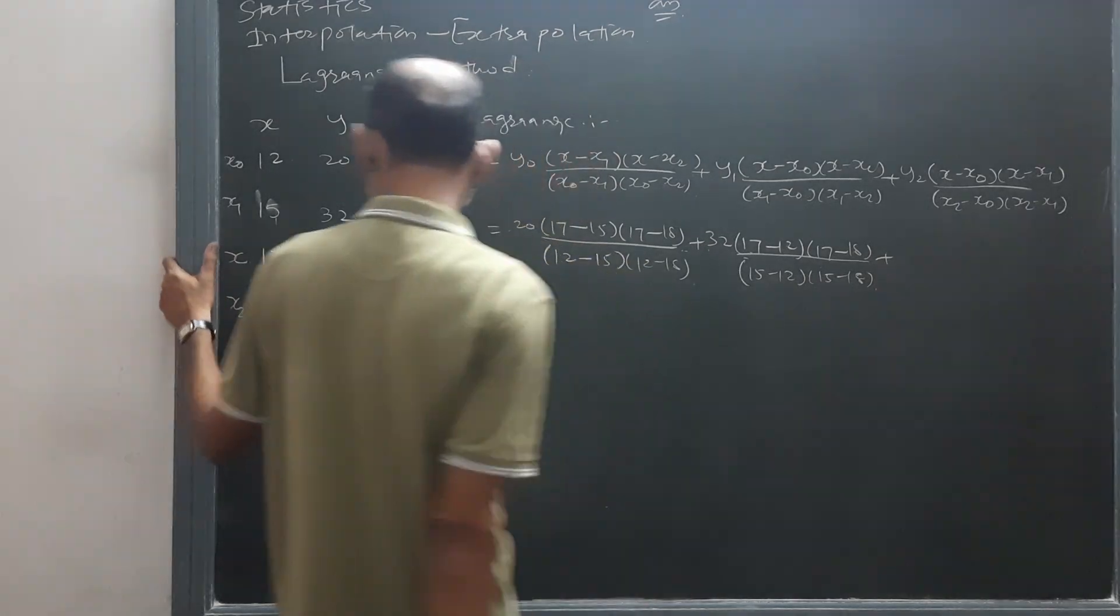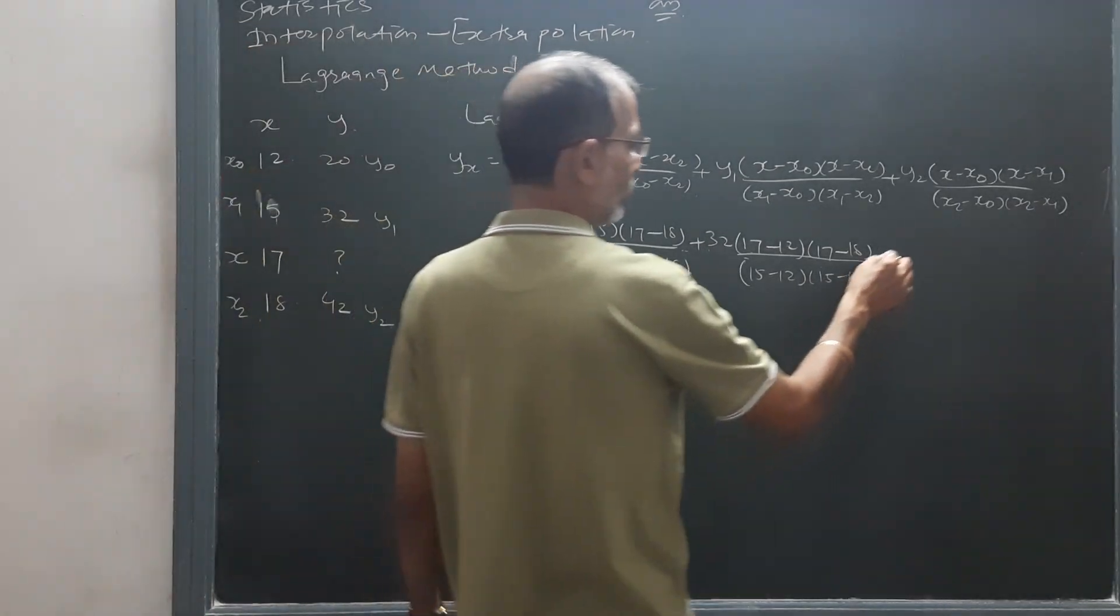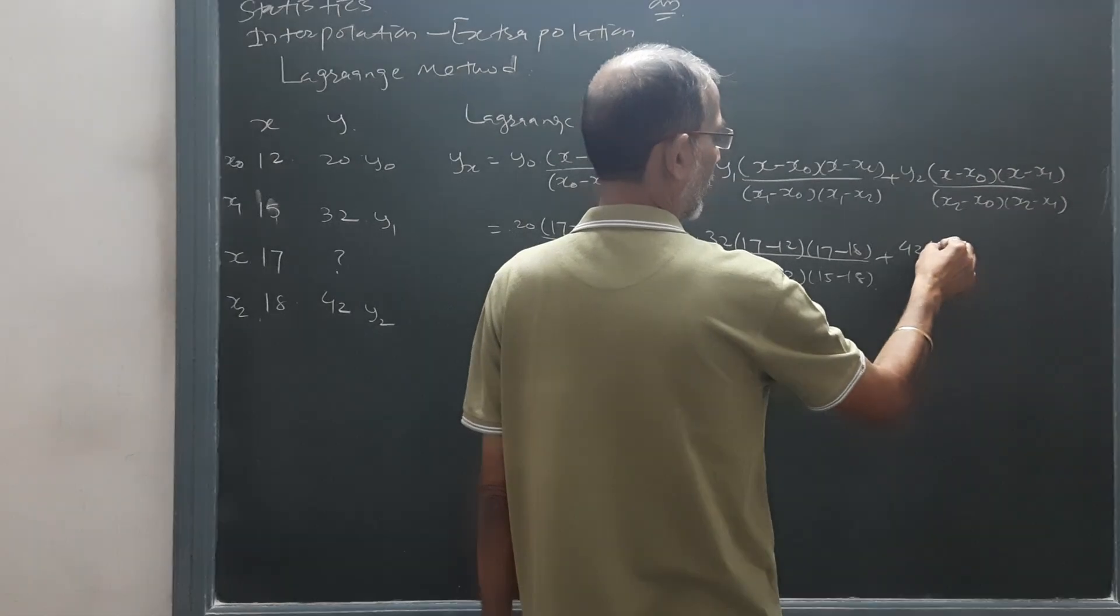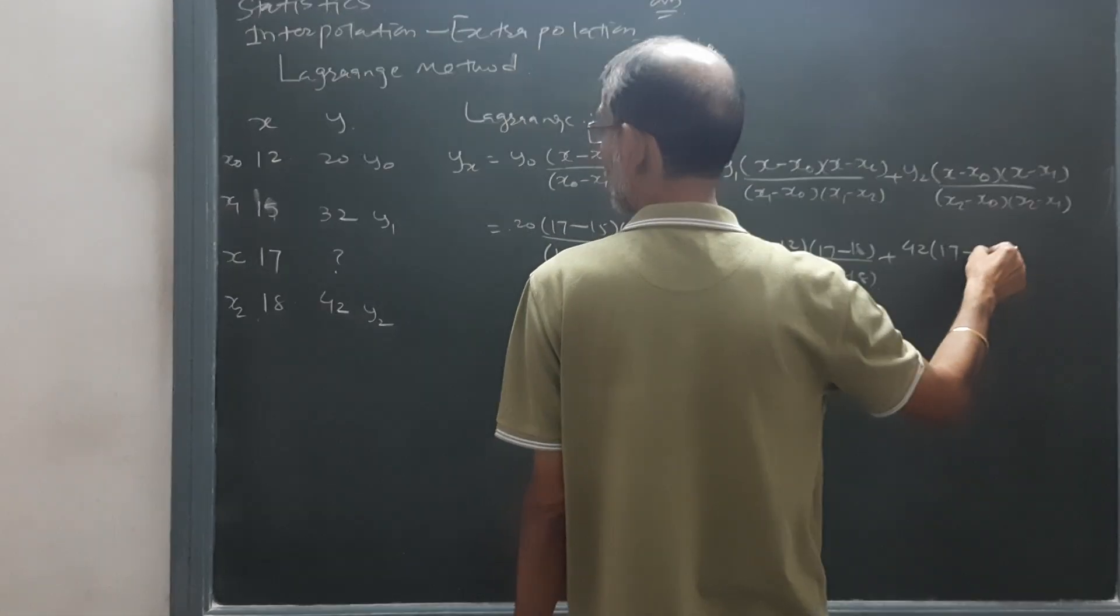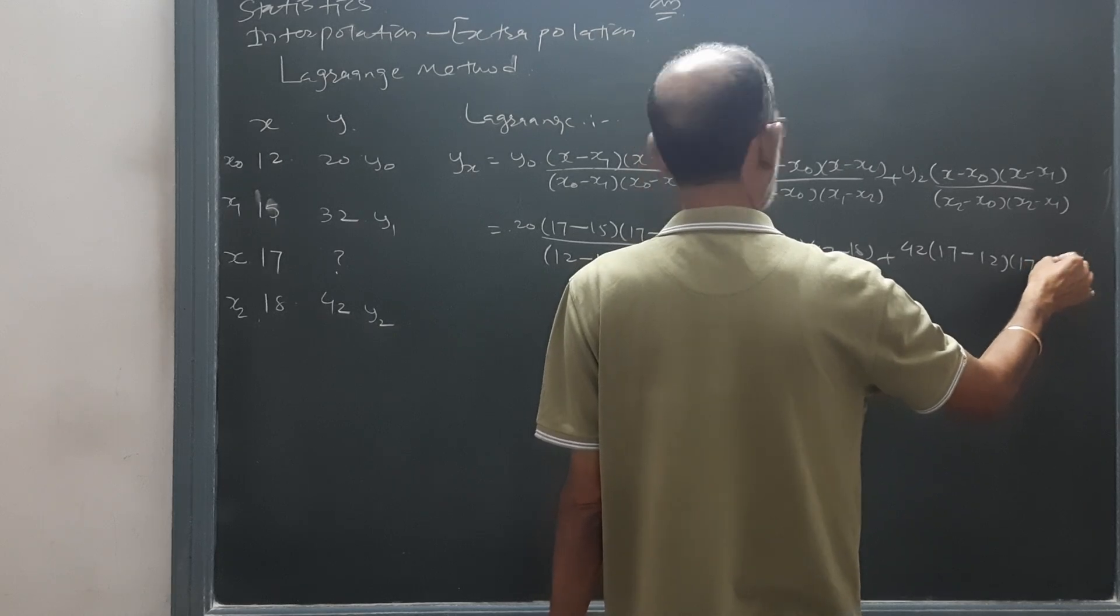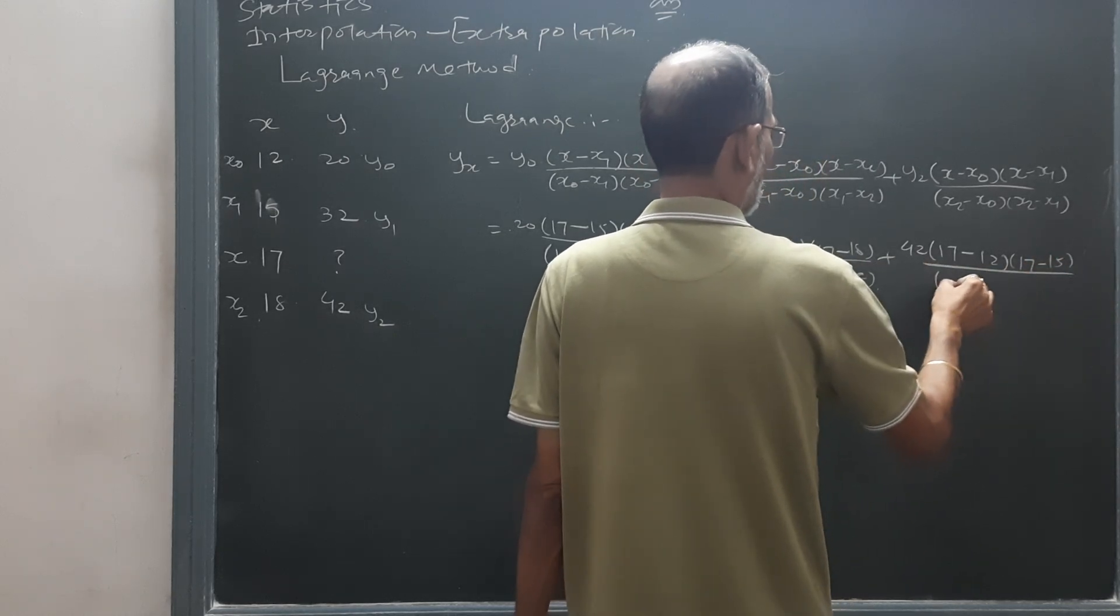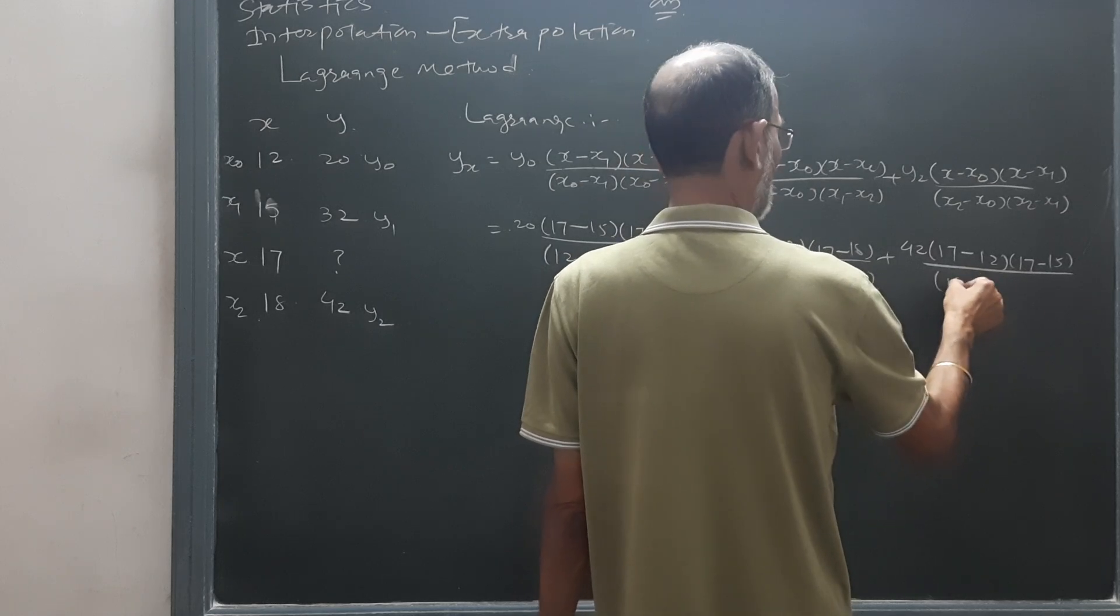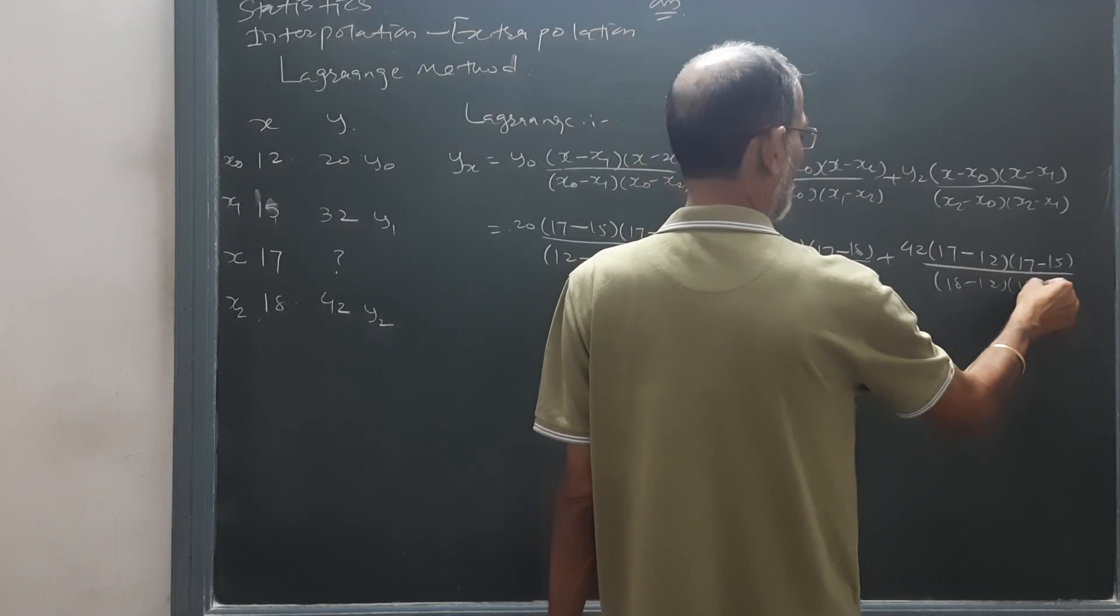At last will come y2 that is 42, x is 17 minus 12, 17 minus 15. Then after x2 is 18, 18 minus 12 and 18 minus 15.